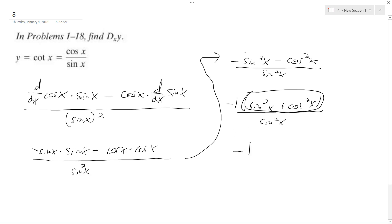So it's just negative 1 on top over sine squared of x, and what we end up with is negative cosecant squared of x, and that's it.